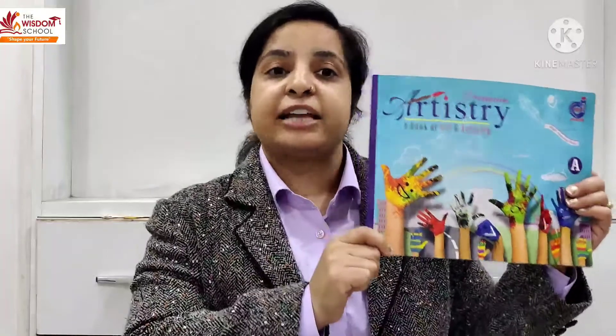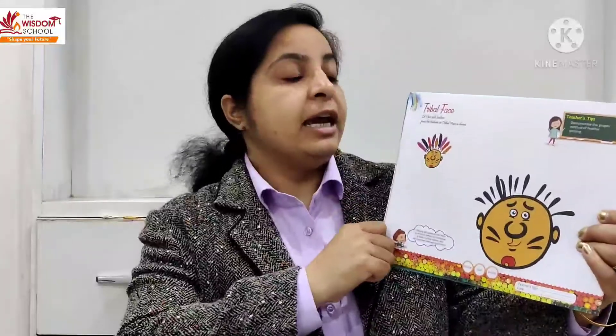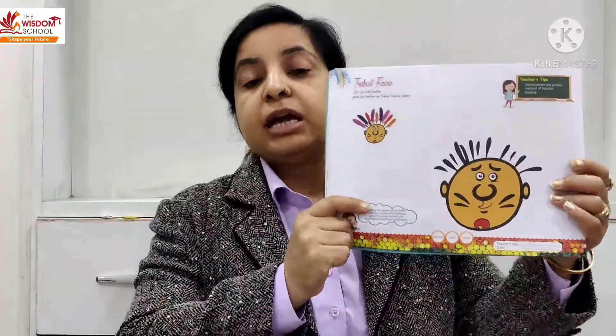So now activity time. Look here. This is your artistry book. Artistry book hai nahi aapki? A book of art and activity. Toh aaj hum is book mein karne waale hai page number 28. Phase number 28. Kya hai ye? Tribal phase. Koon sa phase hai? Tribal phase.